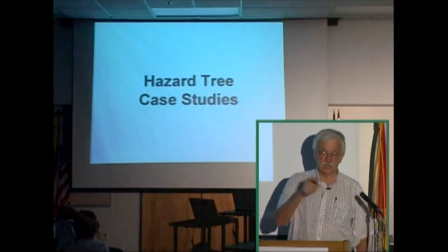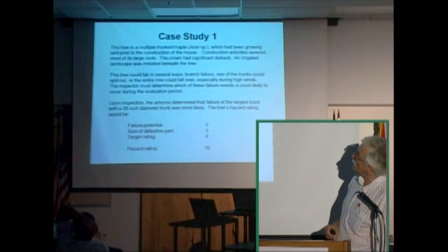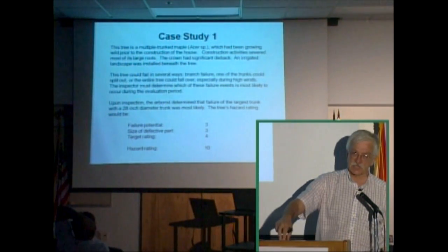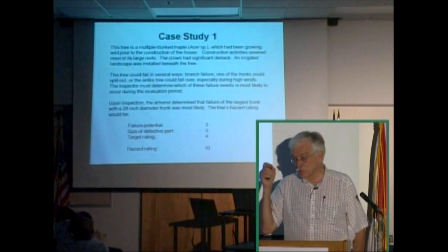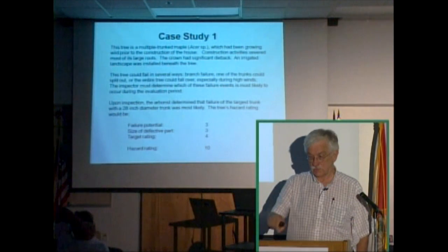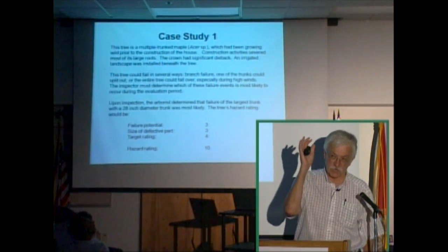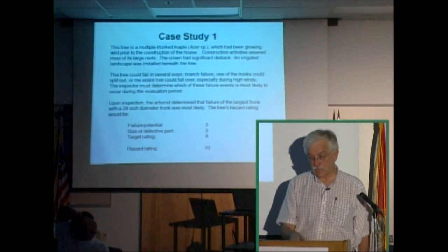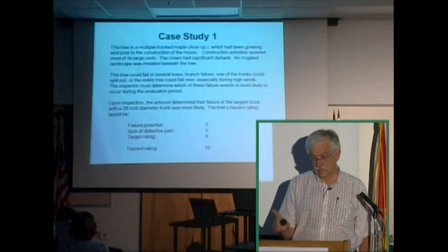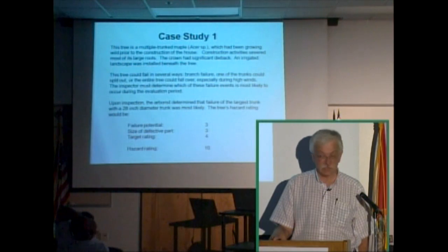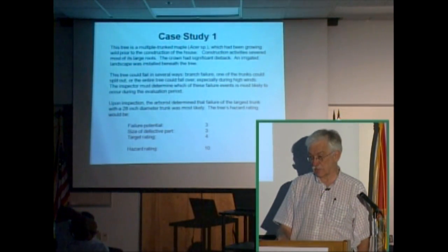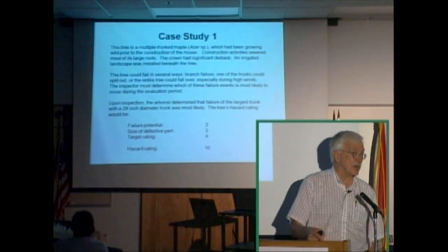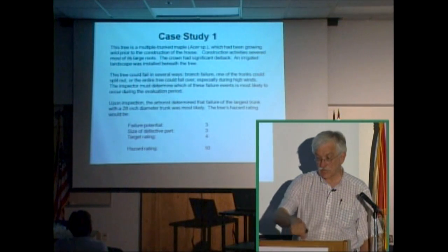Here's a case study involving a maple tree. It was a pre-existing tree saved by the developer for use in the landscape of a newly developed property. It was a multi-trunked maple that had been growing prior to construction of the house. The construction activities involved putting in foundations which severed and cut up the roots. The trunk had significant dieback, and an irrigated landscape was installed in the yard all around the tree. The inspector determined the tree could fail several ways: branches could fail, one of the multiple trunks could split out, or the entire tree could fall over. The inspector determined that the most likely thing to fail was the largest trunk — a 28-inch diameter trunk.